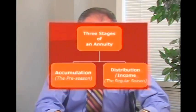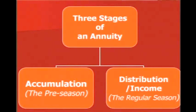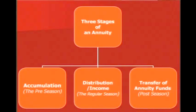The second stage is the distribution and income stage — the regular season. I compare the accumulation side to the preseason if this were a sporting event; distribution is the regular season where we're playing ball. The third stage is what I call the postseason: the transfer of annuity funds. The postseason does come to everyone, and there are death and taxes — those are the two certain things.